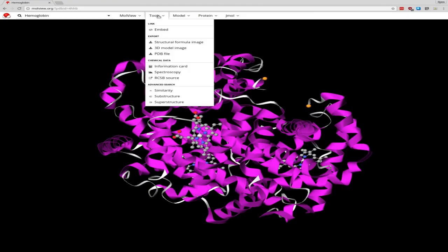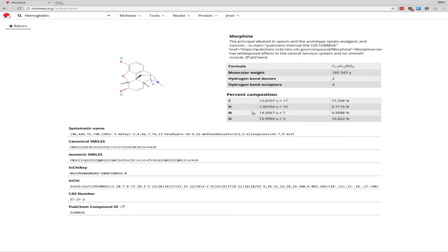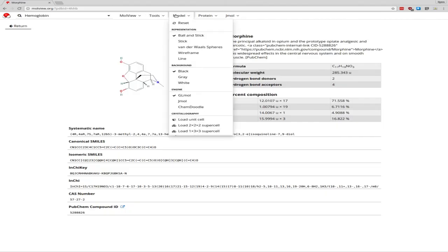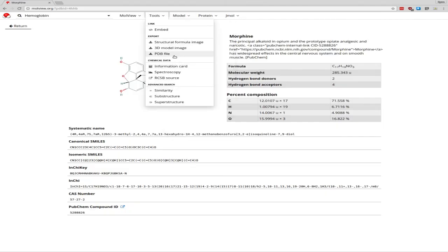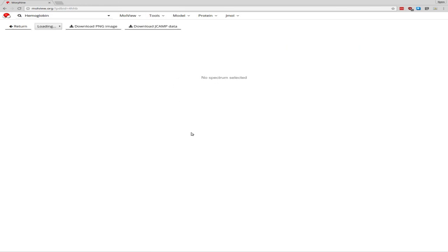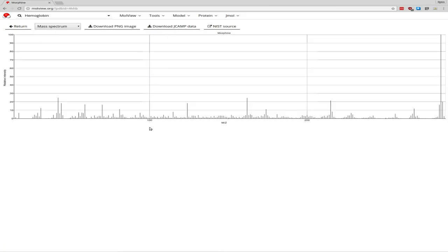Malvue connects to some databases. So we could look up information about the morphine that we looked up earlier. So it tells us lots of information that it's able to find in the database about it. It has some spectroscopic information. We can get our mass spectrograph for morphine. And in general, there are just lots of cool tools that are available in Malvue. So it's very handy for getting these 3D pictures without a modeling kit, so that you can visualize where the dipole should be and how the structure of the molecule influences its behavior.